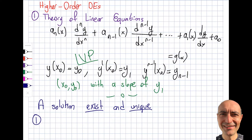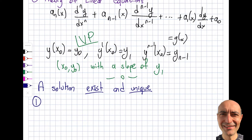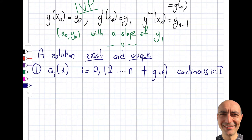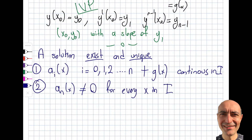There are two conditions that need to be satisfied. First, all the coefficient functions aᵢ(x) for i from 0 to n, plus g(x) on the right-hand side, need to be continuous in the interval of interest. Second, the leading coefficient aₙ(x) should not be zero for every x in that interval. If both conditions are satisfied, I have a unique solution that exists.